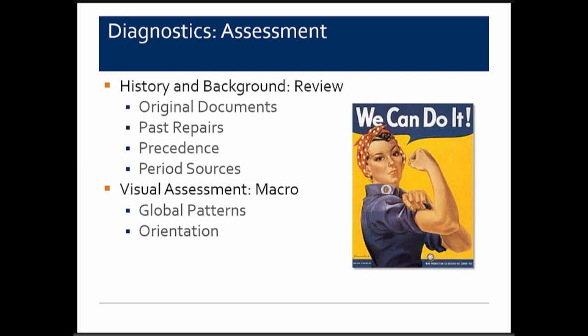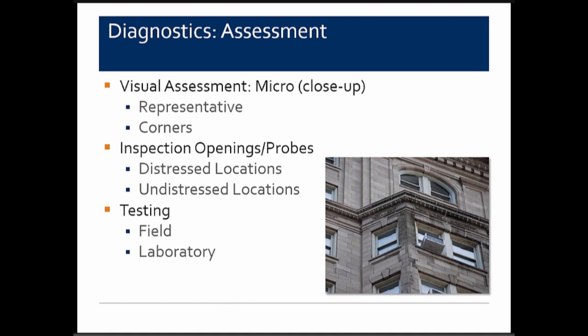In terms of facade assessments, the general approach includes reviewing original documents, past repairs performed, and period sources for understanding how these systems go together. Terracotta-clad buildings are in a period of transition in the facade sequence — they are a hybrid system combining traditional load-bearing approaches with more modern curtain wall concepts. Visual assessment at the macro level looks for global patterns and distress associated with orientation.